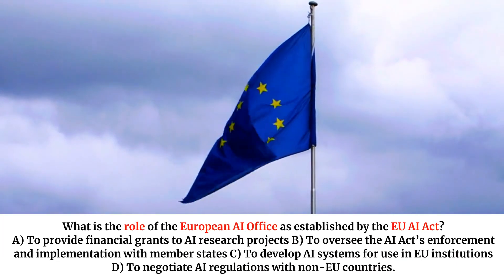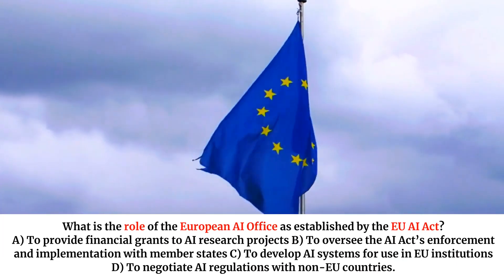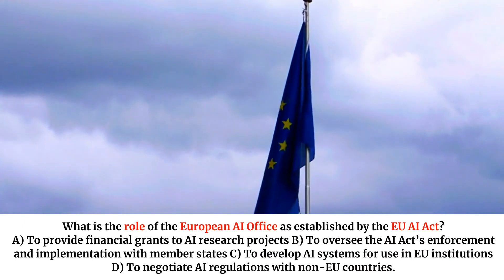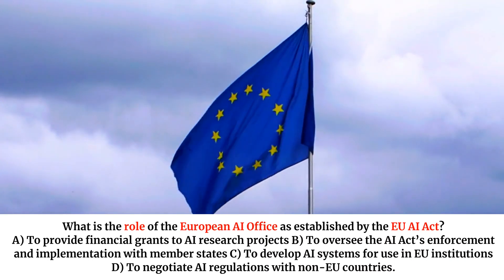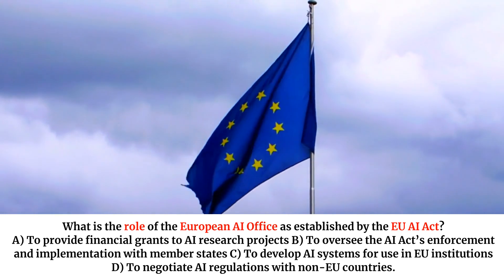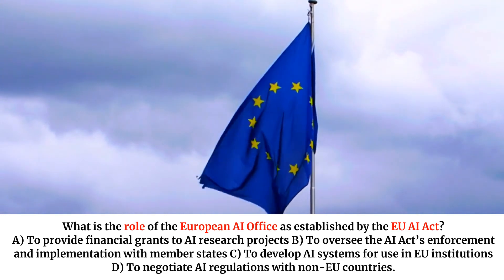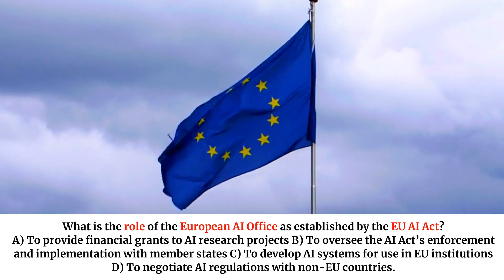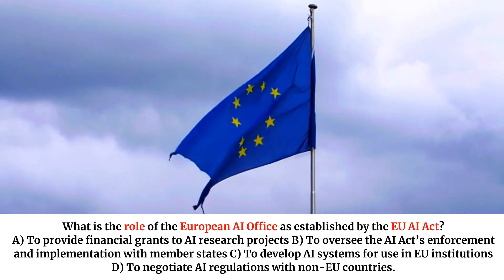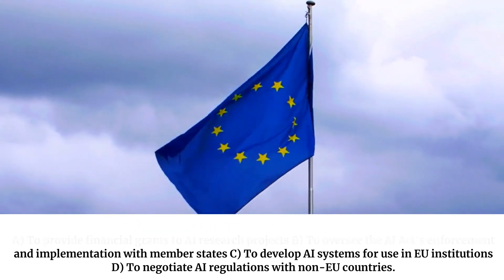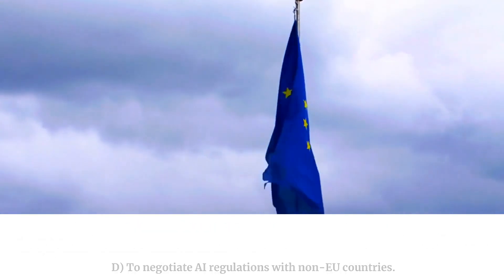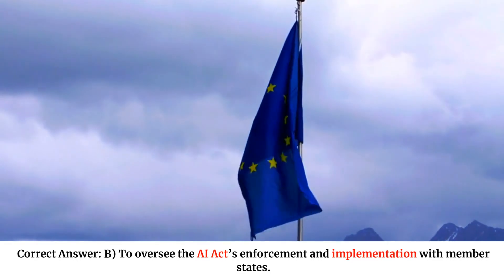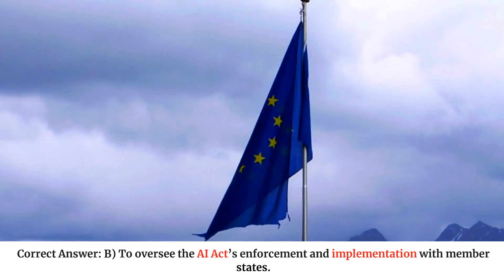What is the role of the European AI Office as established by the EU AI Act? A. To provide financial grants to AI research projects. B. To oversee the AI Act's enforcement and implementation with member states. C. To develop AI systems for use in EU institutions. D. To negotiate AI regulations with non-EU countries. Correct answer: B. To oversee the AI Act's enforcement and implementation with member states.